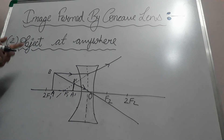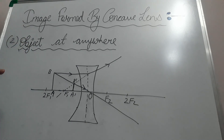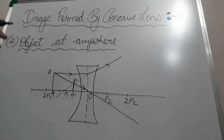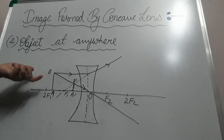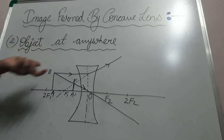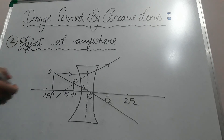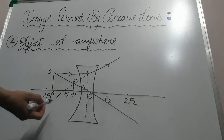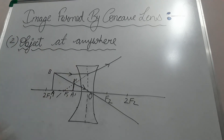Remember: in concave lenses, the image is always smaller than the object, always virtual, and always erect. Try to form the images through the concave lens for other situations, such as object at F1 or between F1 and O. Thank you.